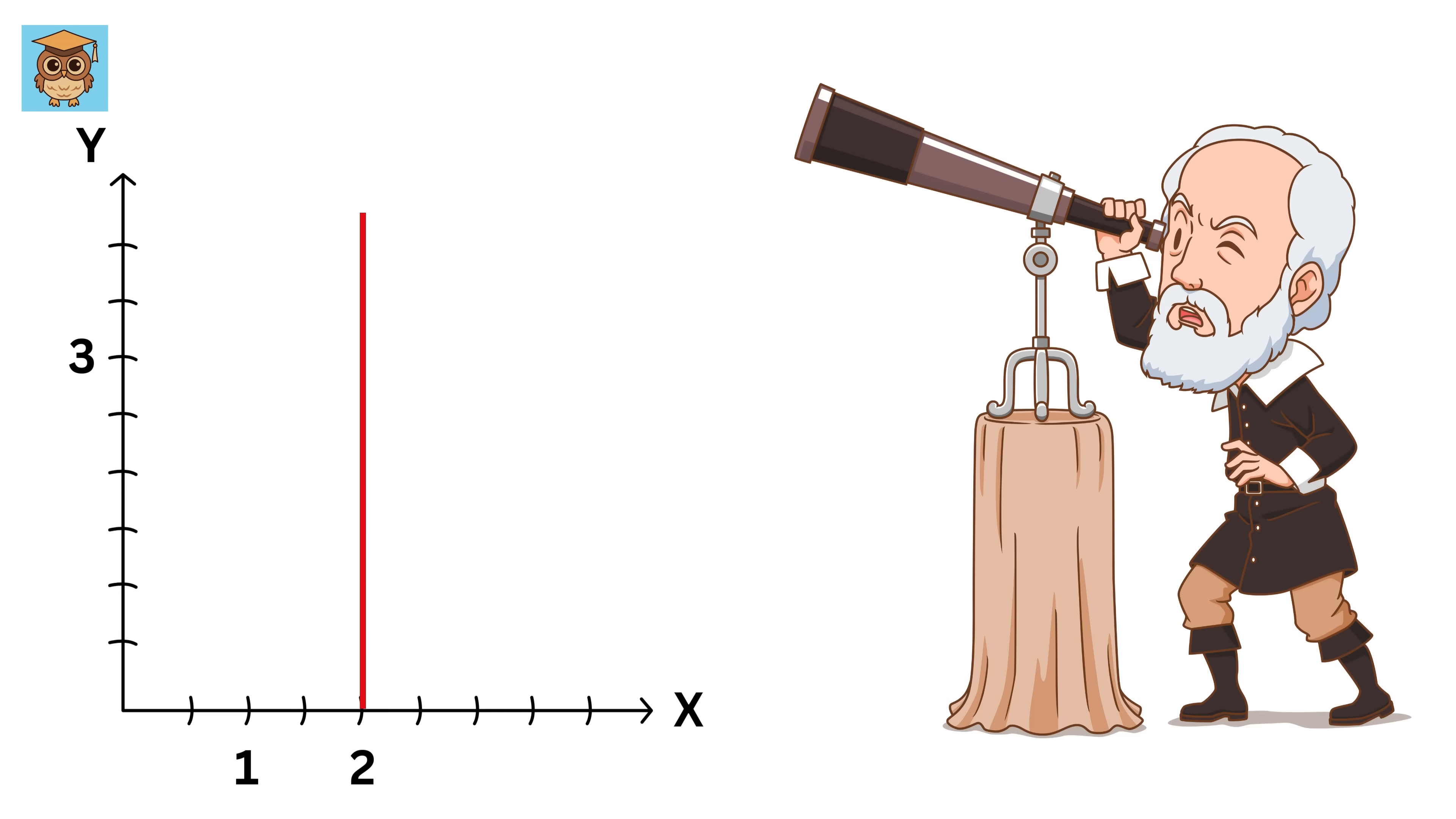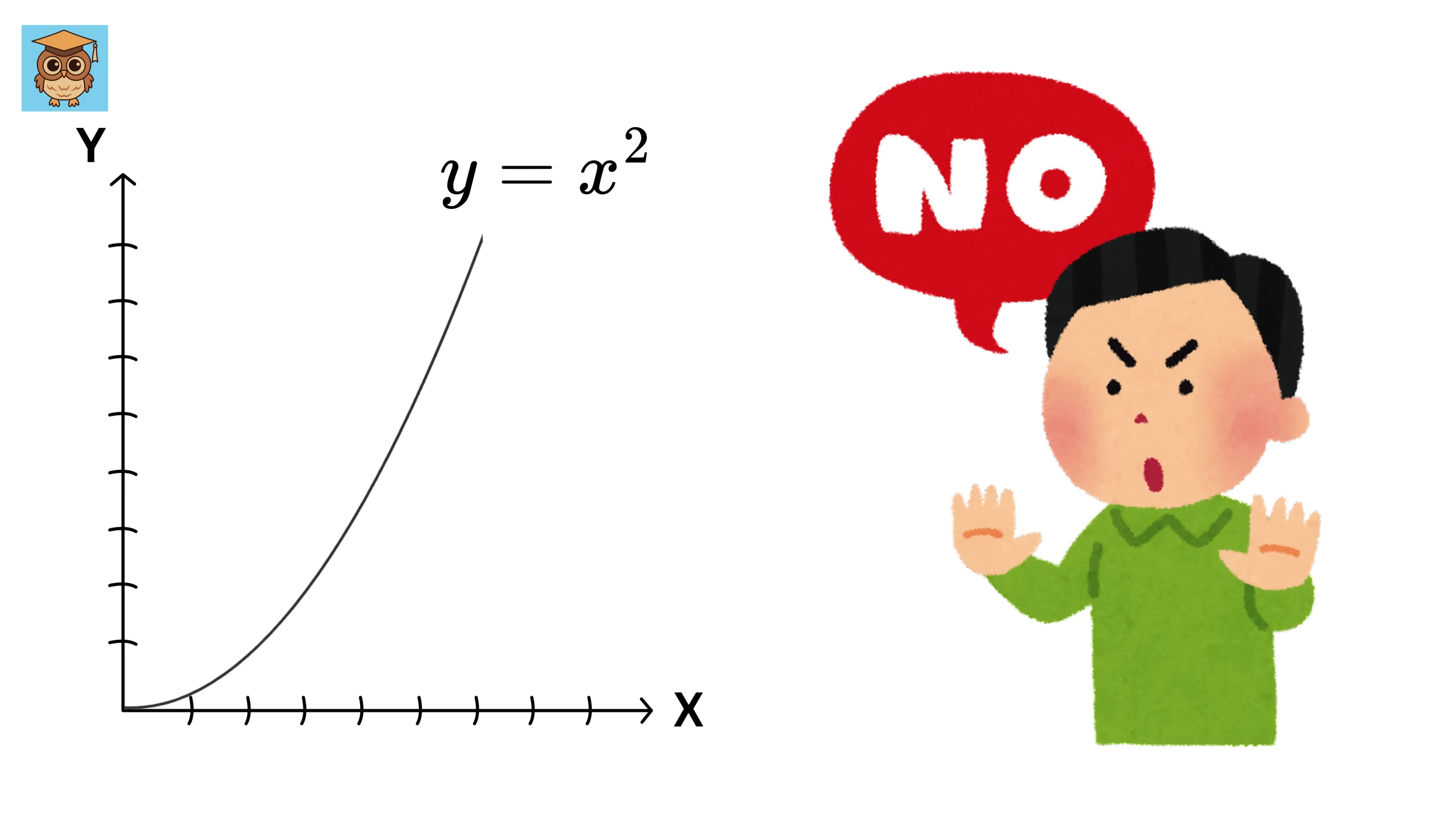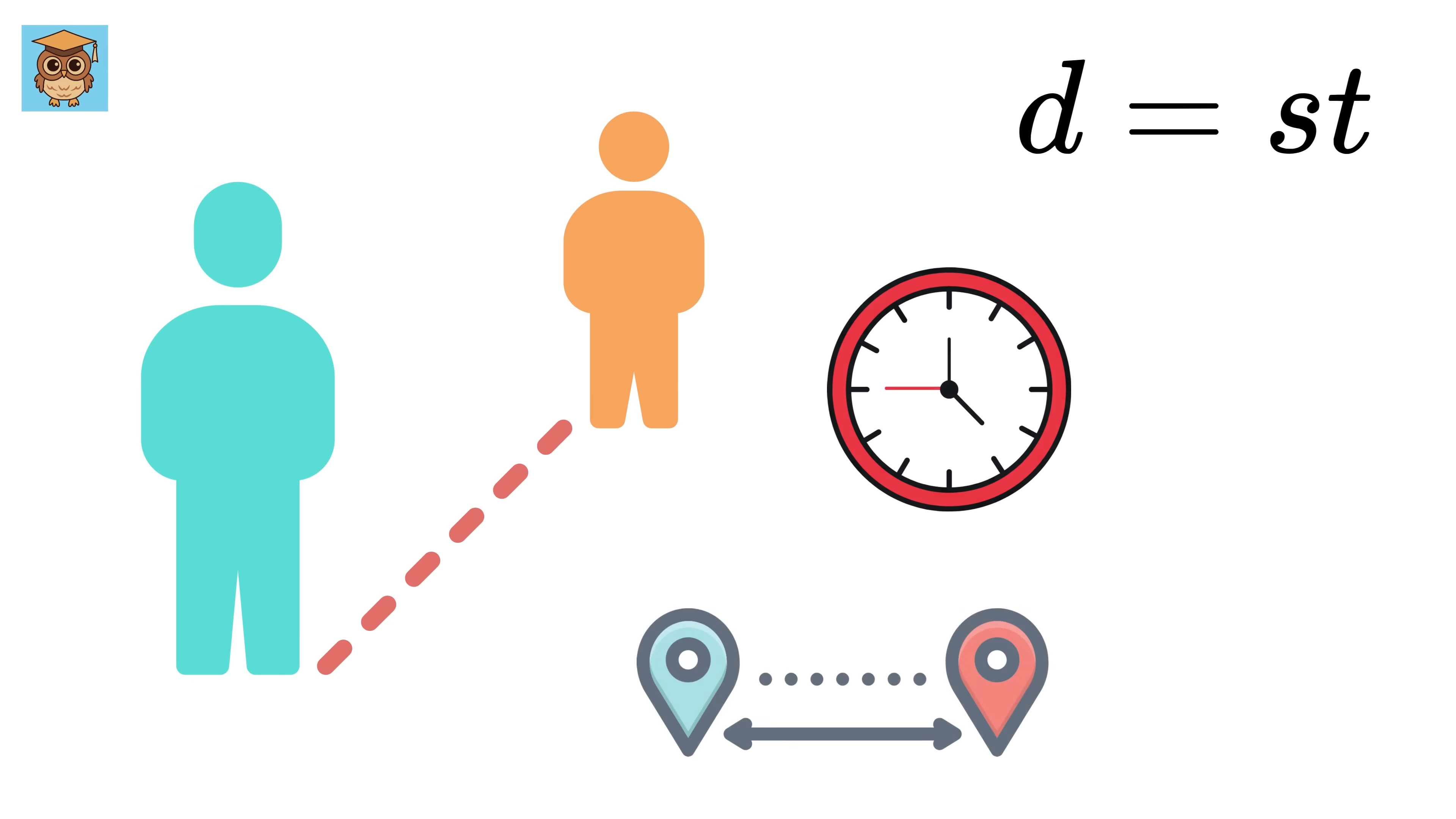But then, someone like Galileo might come along and say, what about something like y equals x squared? That's not a straight line. It's a curve. For example, we all know that distance equals speed into time.